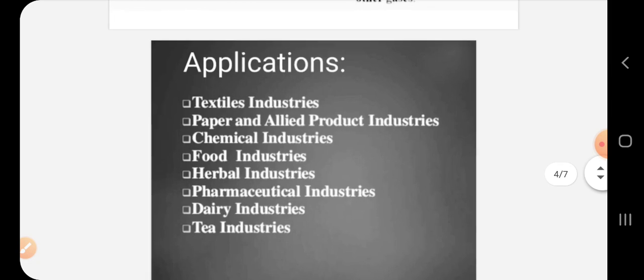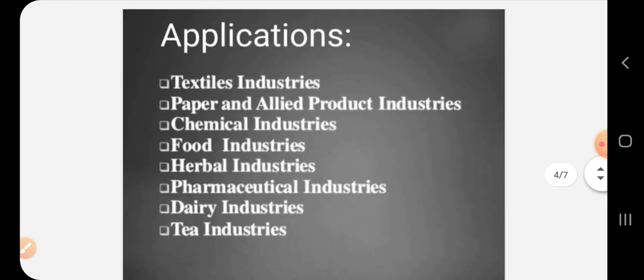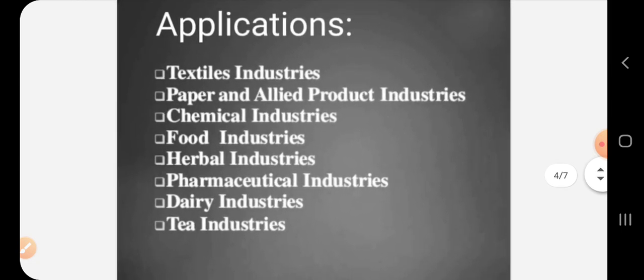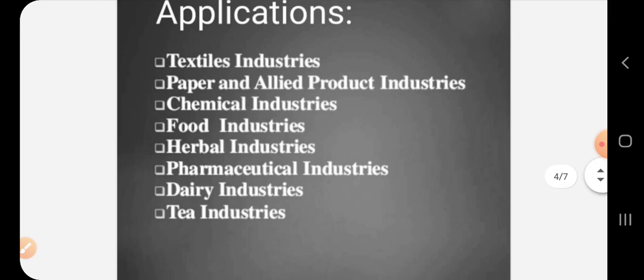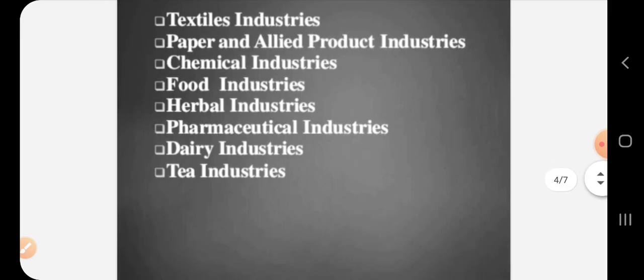Drying finds its application in a wide range of industries. Common ones include textile industries, paper and allied product industries, chemical industries, food industries, herbal industries, and pharmaceutical industries. We will be discussing types of drying equipment further in this unit, where we will see these applications in more detail.